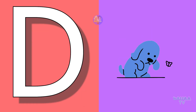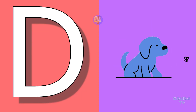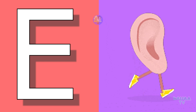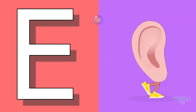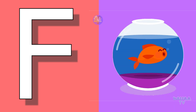D for dog, dog means putta. E for ear, ear means kaan. F for fish, fish means machli.